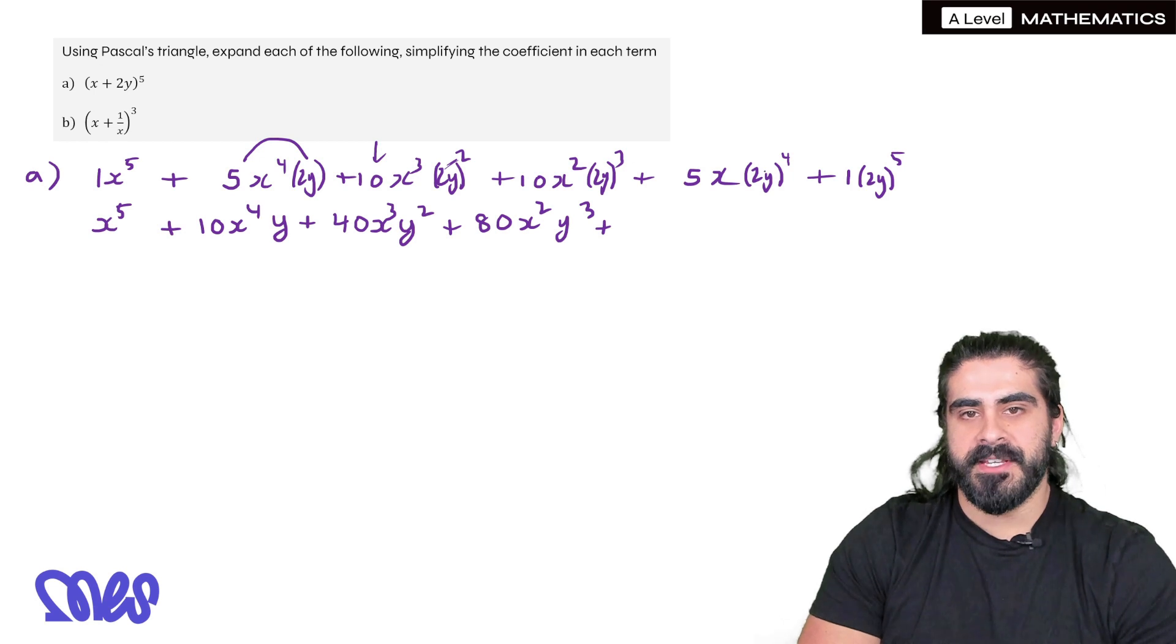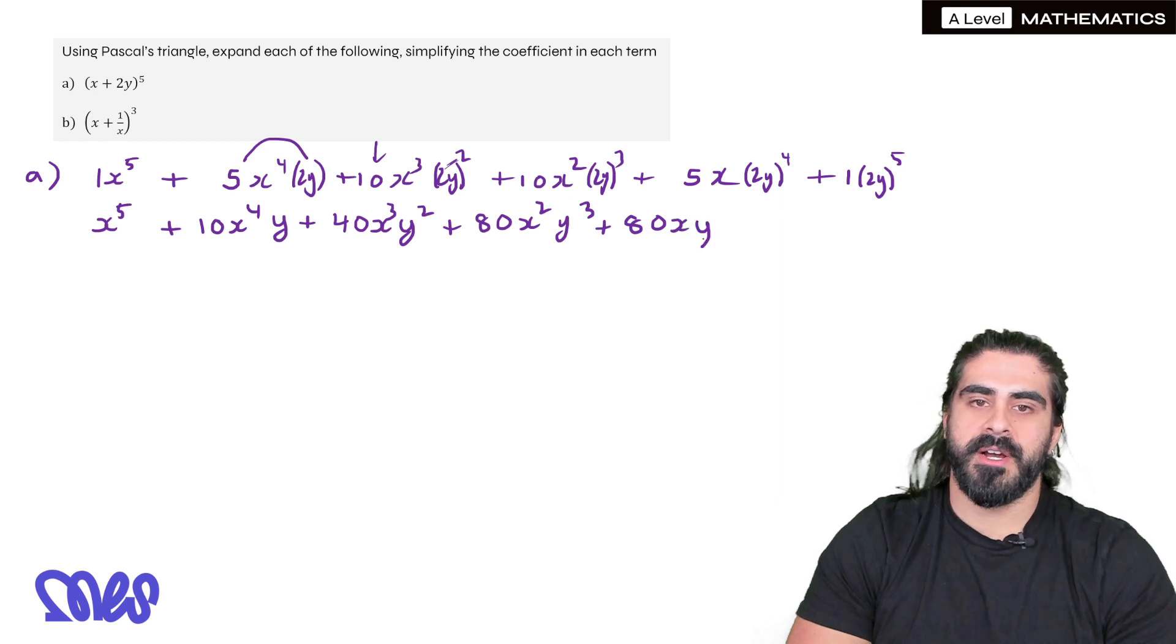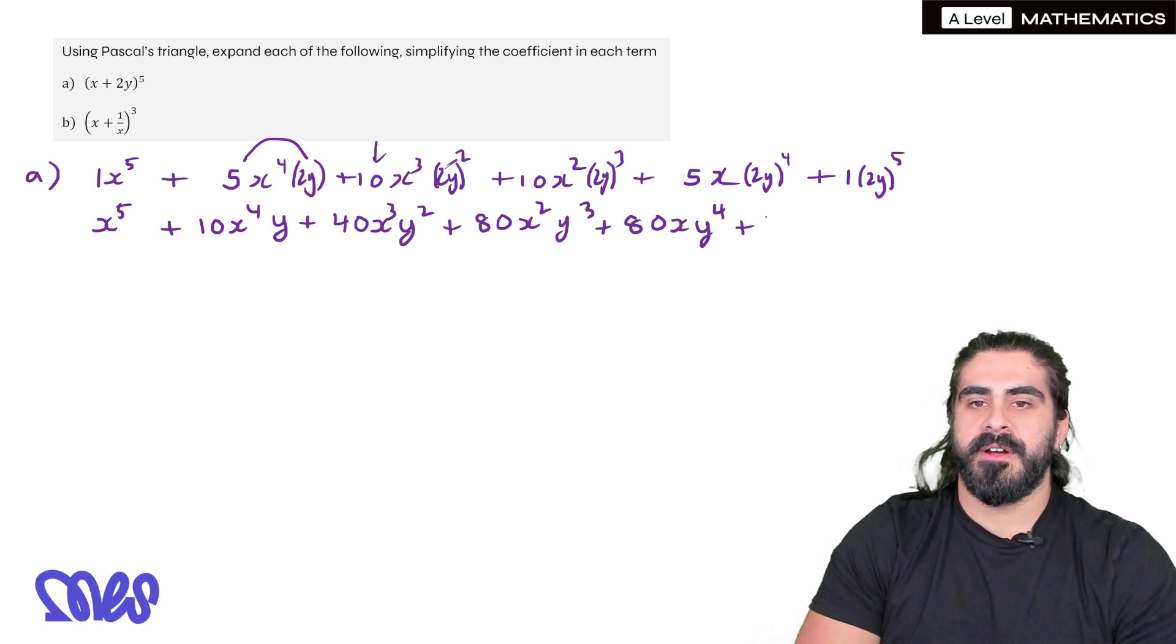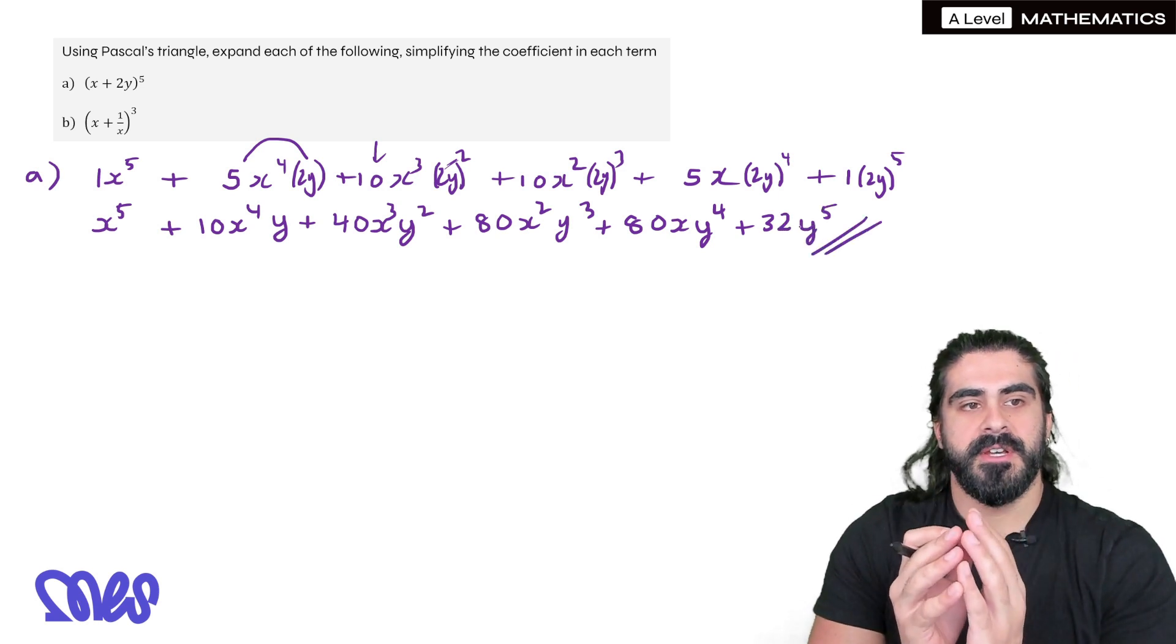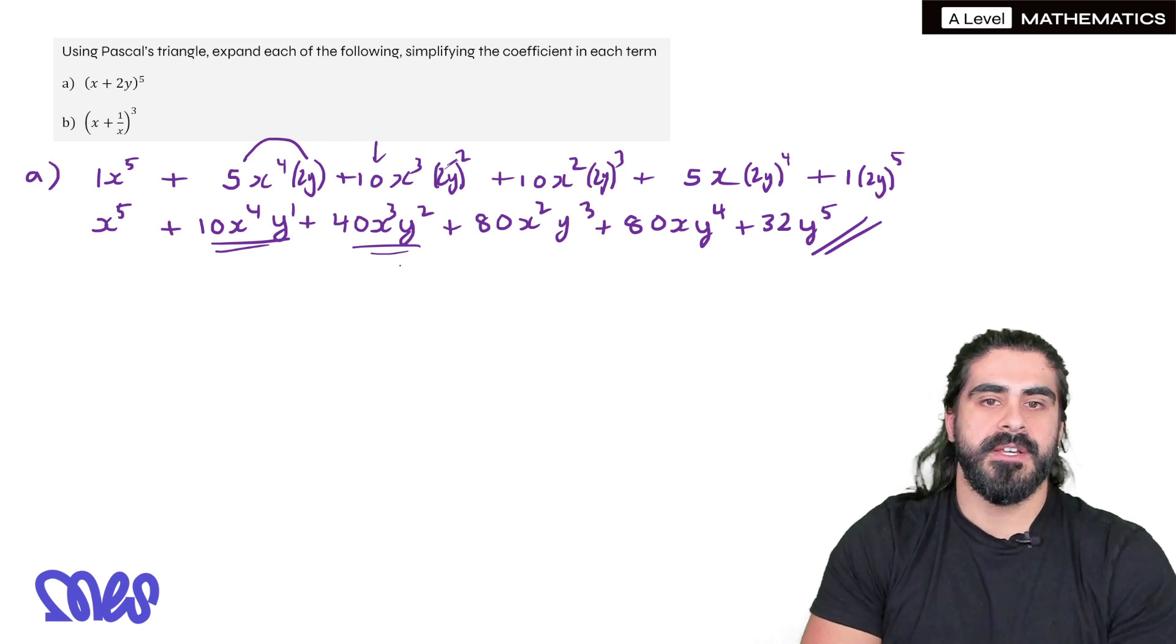2 to the power of 4 is 16, 16 times 5 is 80xy⁴. Then finally we have 2⁵ which is 32y⁵. And again look at all the powers for the terms. So you have for example this term here, you have 4 + 1, so it's power of 5. In this term 3 + 2, power of 5. So you know generally you've done it right.